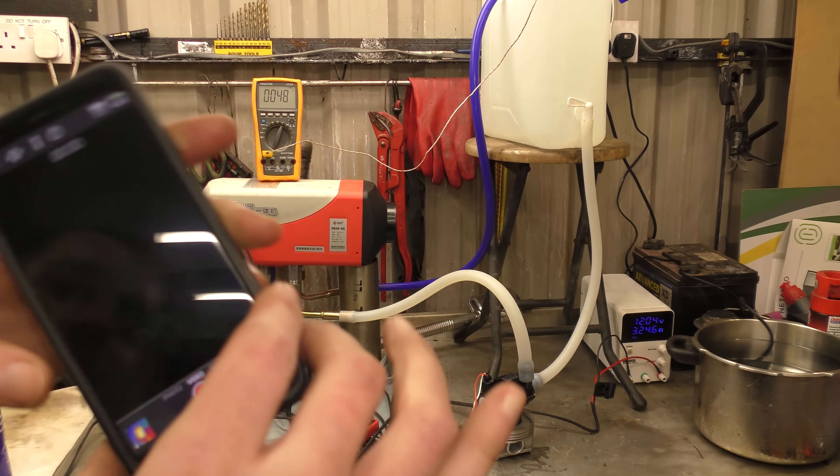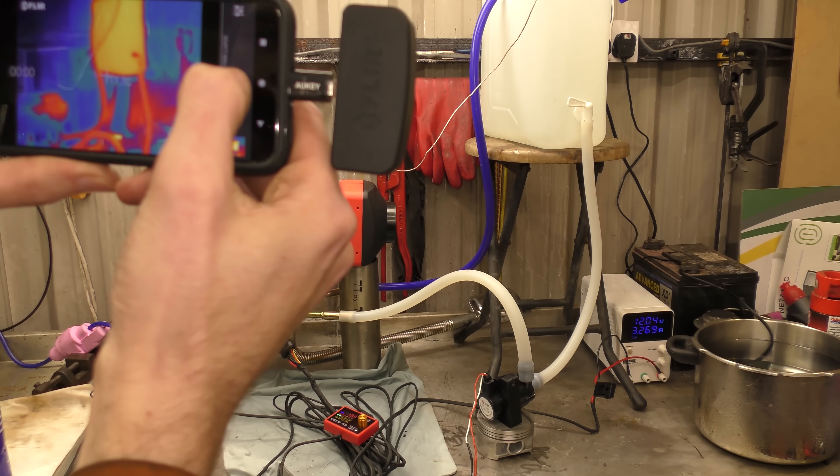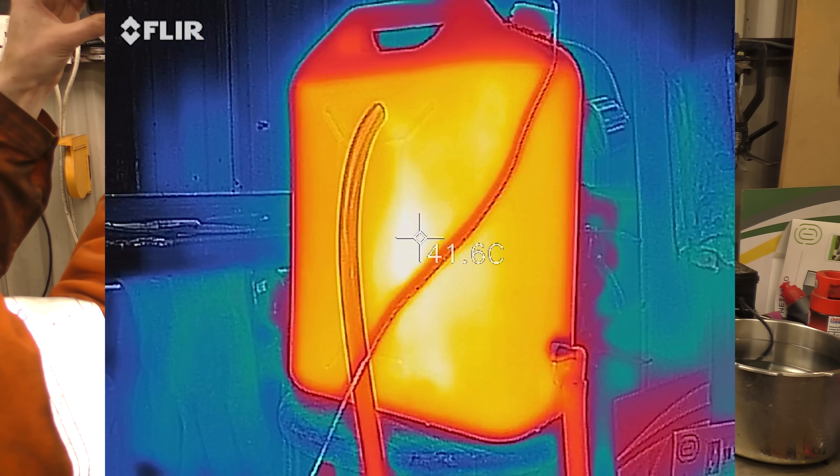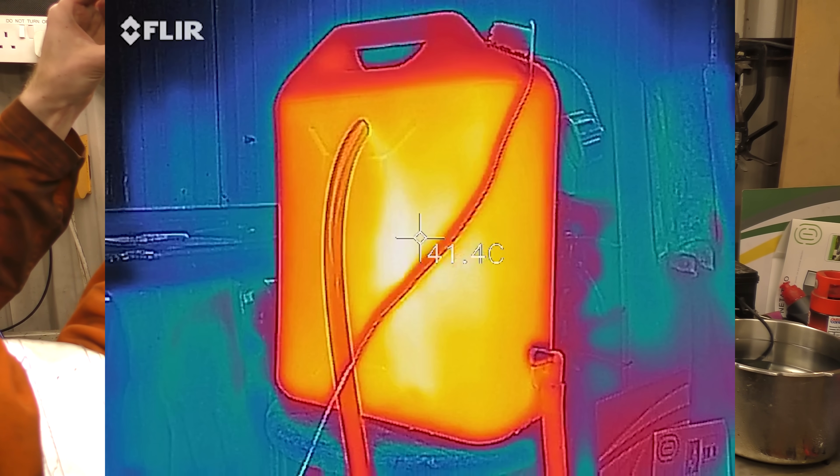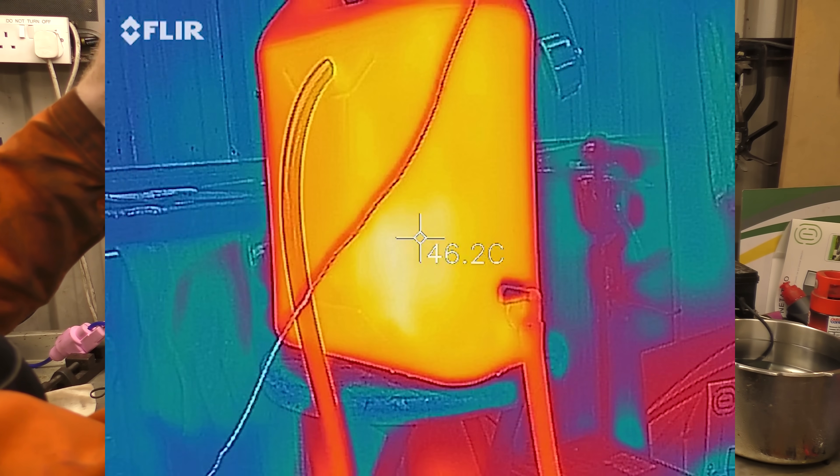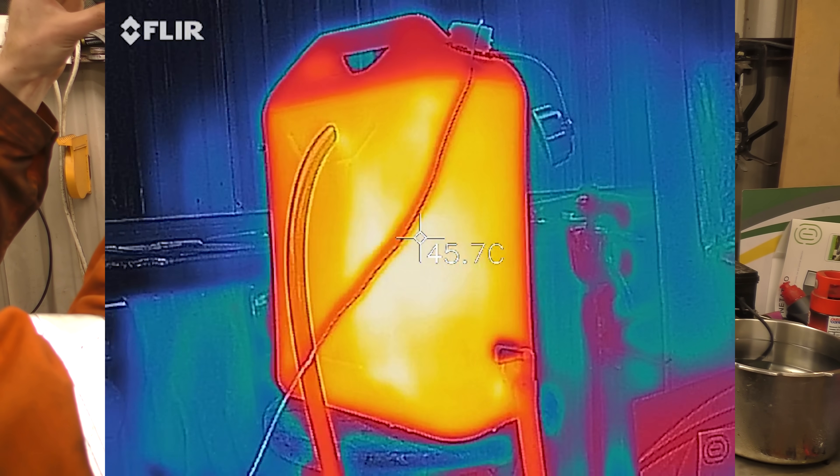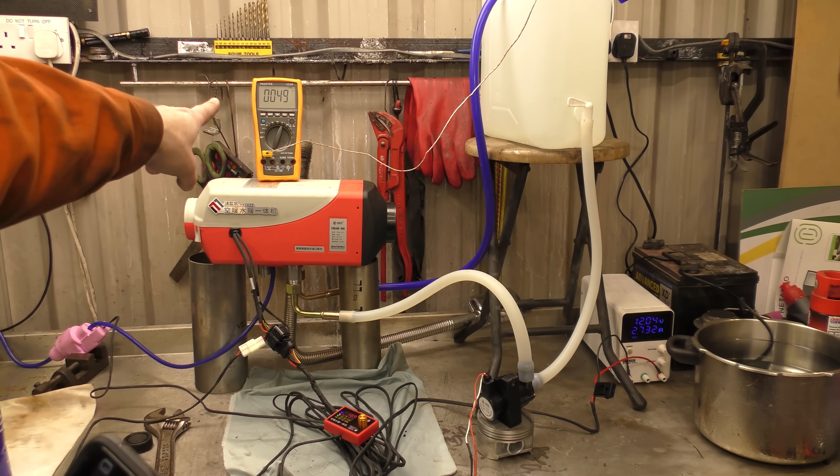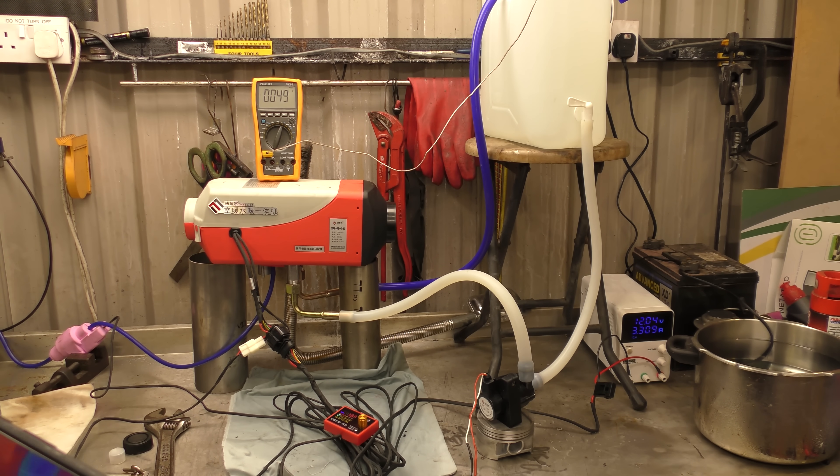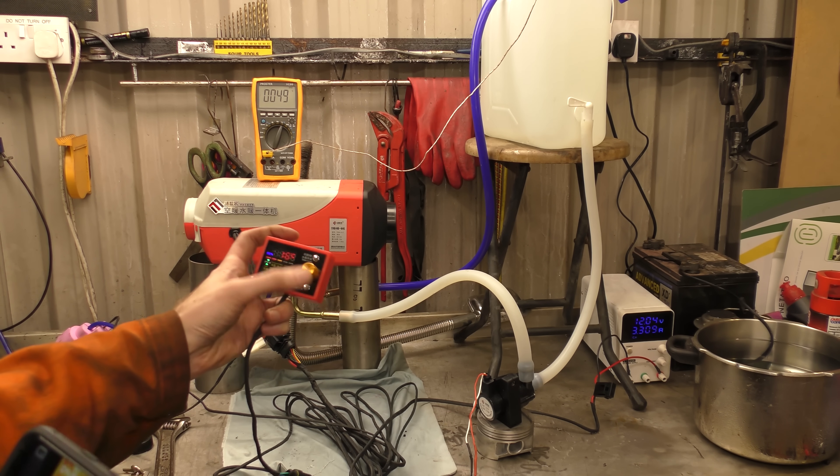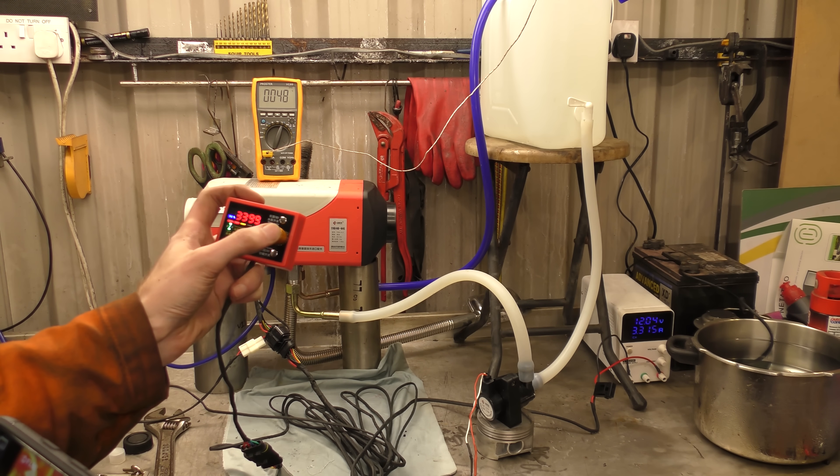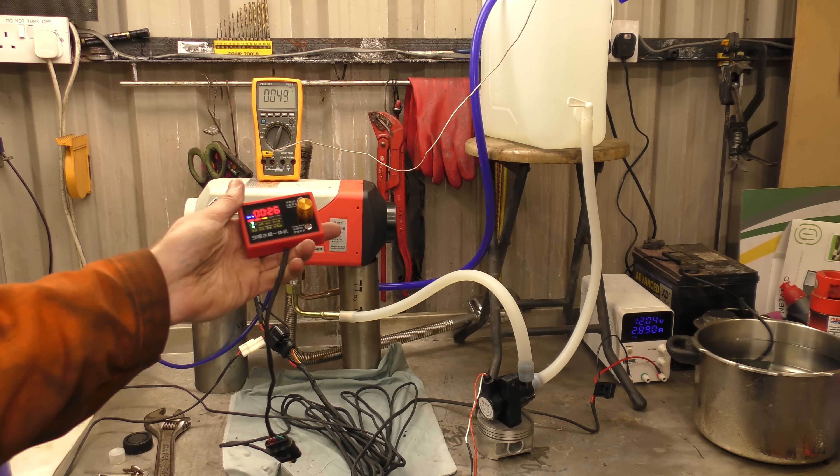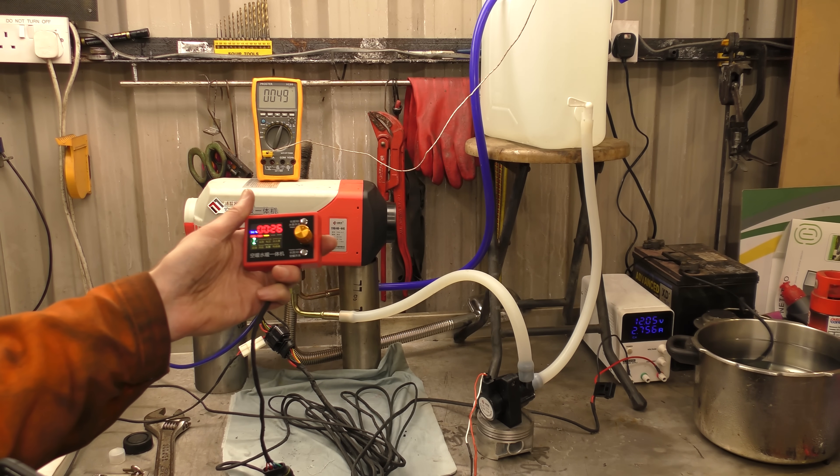Well, that's another 10 minutes has passed us by. The FLIR is now showing 46 degrees. The thermometer thermocouple on the meter says 49. So, 20-odd minutes... What does this thing say? It says it's run for 26 minutes. So 20 minutes of heating and six minutes of me dicking about starting, I suppose.